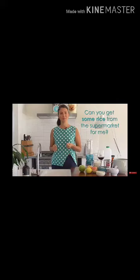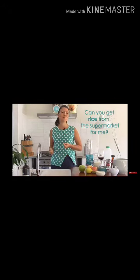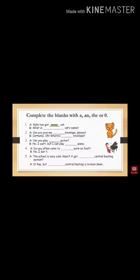We can use 'some' instead, but there is no article — you write zero and put a dash. Here is another example: 'Can you get some rice from the supermarket for me?' — is that correct? No. The correct sentence is: 'Can you get rice from the supermarket for me?' — no article before 'rice'. So this will be the correct sentence. I hope you have understood where to use 'a', 'an', 'the', and where you don't have to use any article — that is no article — you put a dash in front of that noun.